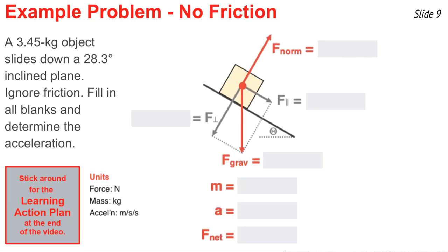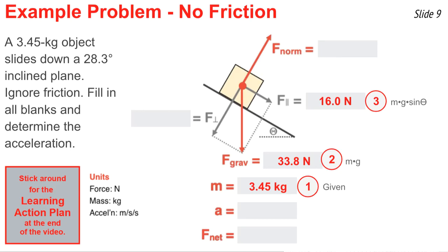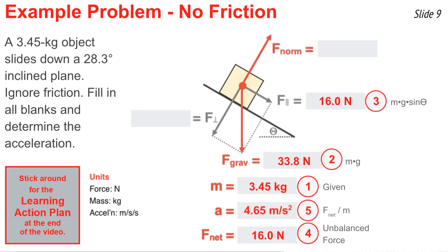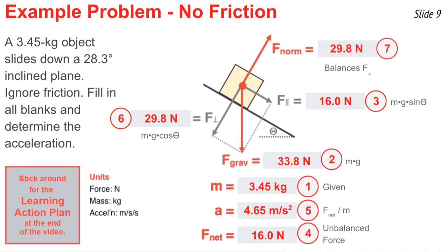Here we have a 3.45-kilogram object on an incline at 28.3 degrees, and it's friction-free. I begin with the given mass, 3.45 kilograms, then calculate F-grav as mass times 9.8 Newtons per kilogram. For F-parallel, I use mg sine theta at 28.3 degrees and get 16.0 Newtons. Since that's the only force parallel to the plane, it's also the net force: 16.0 Newtons. Using Newton's second law, 16.0 Newtons divided by 3.45 kilograms gives the acceleration. Then F-perpendicular is mg cosine theta, and the normal force balances it — filling in all blanks.